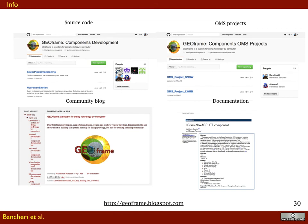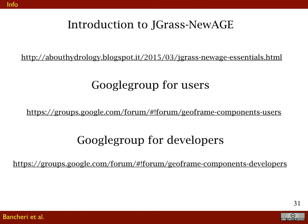All the material shown here is based on open source material offered at geoframe.blogspot.com and on GitHub, where we also produce extensive documentation. Essentially all of what you see in this presentation is documented and can be readily used by anyone. An introduction to the JGrass New Age system — which we may now call GeoFrame New Age — can be found in the About Hydrology blog, and there is a JGrass New Age Essential that you can search for. We also have a Google group for users and a Google group for developers.